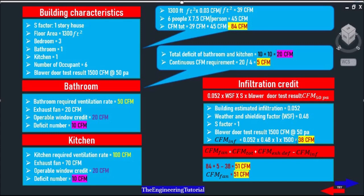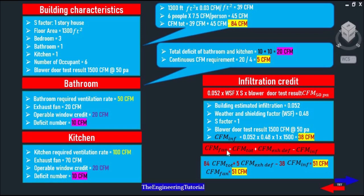That gives us an infiltration credit of 38 CFM and to determine the whole house ventilation fan will use this equation. CFM fan equals CFM total plus CFM exhaust deficit minus CFM infiltration. So if we plug these numbers in we see that comes out a total ventilation rate of 51 CFM. So we need to install a fan that can provide a total continuous ventilation of 51 CFM.